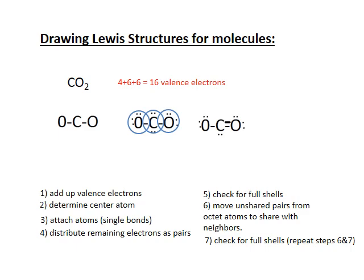After moving that pair, the oxygen on the right now has eight electrons and carbon still has eight electrons. Moving an electron pair from an unshared to a shared position doesn't decrease the count for the original atom — carbon still keeps its eight electrons, just sharing two more than before. Since the left oxygen still has only six electrons, I repeat the process, moving another pair from carbon to create a second double bond. Now every atom has an octet. Sometimes steps six and seven need to be repeated a couple of times to reach the correct answer.